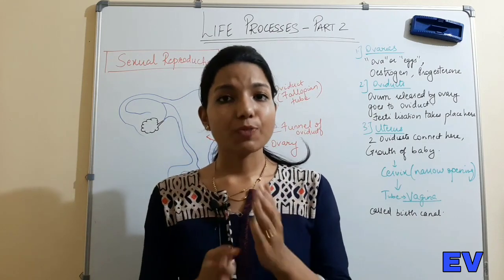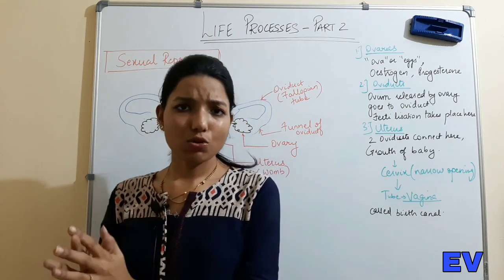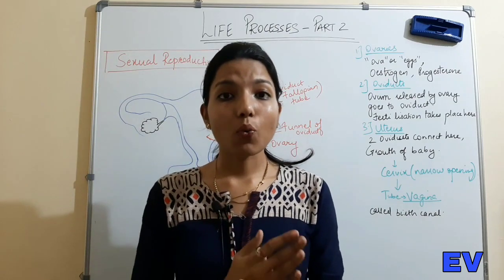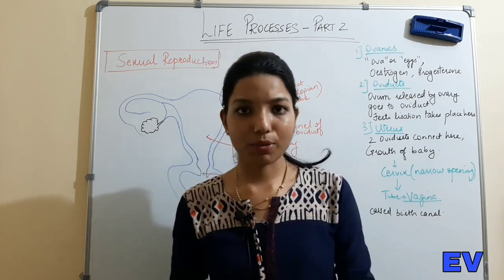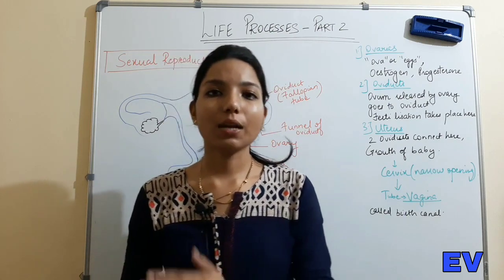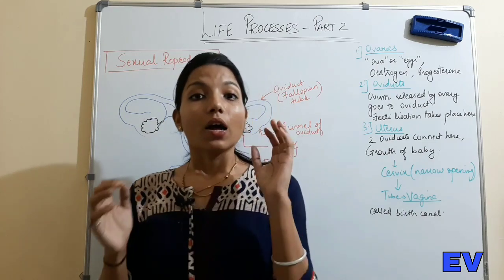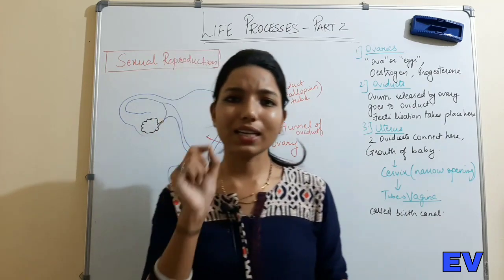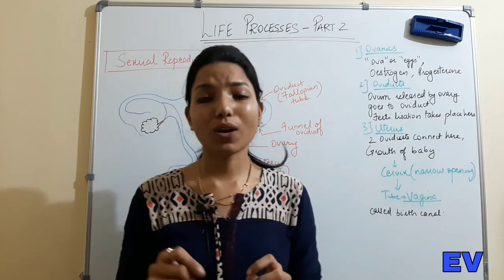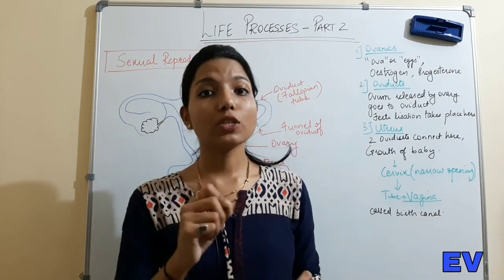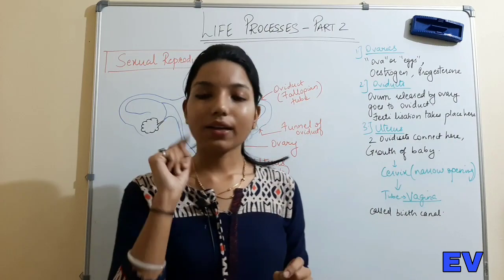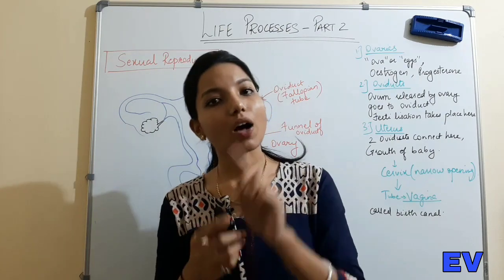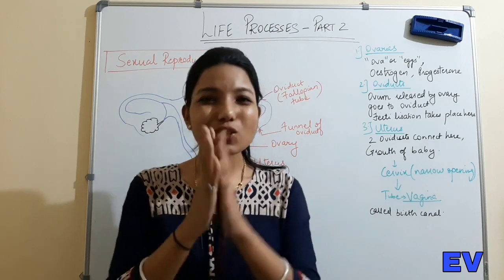The first period starts between 10 to 17 years of age. It continues until 45 to 50 years, when menopause occurs - the time when eggs are no longer released and periods also stop. At the time of fertilization, sperms come in millions - they are microscopic and very tiny. From those millions, only one sperm meets the ovum and fertilization occurs.